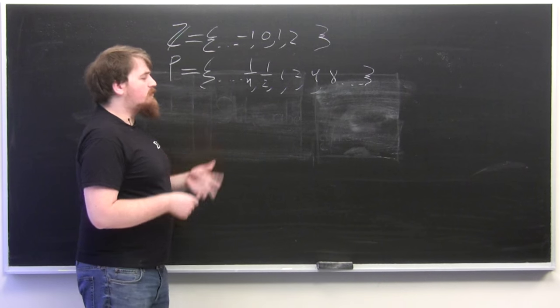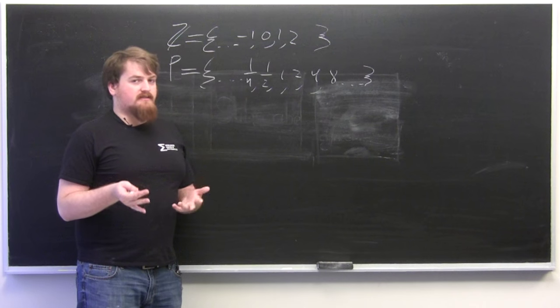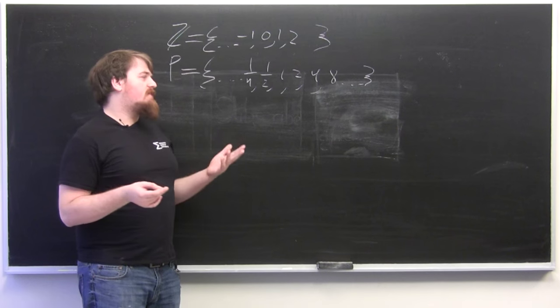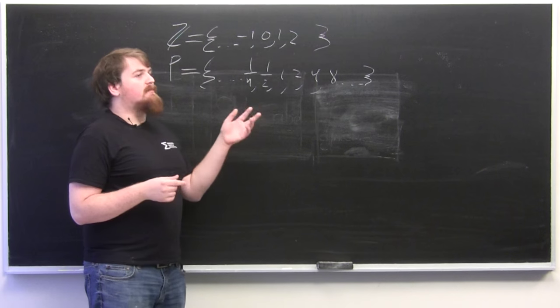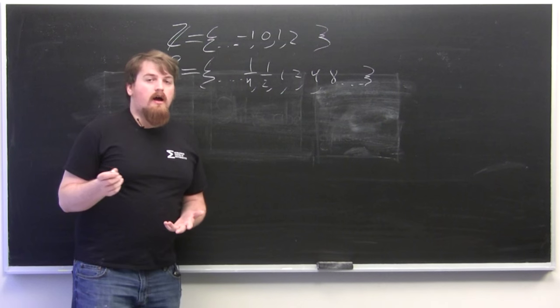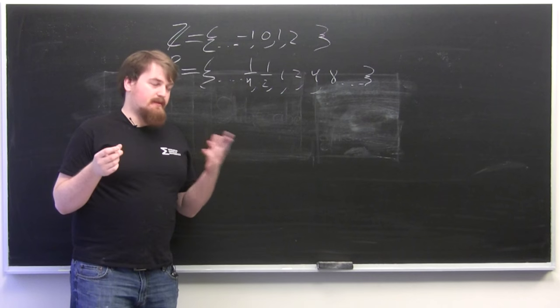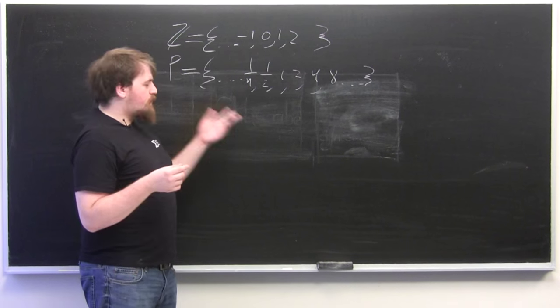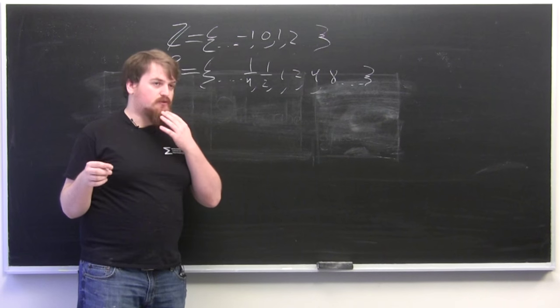In P, whose operation, as we talked about last time, is multiplication, you would say that 4 times 8 is 32. Or if you wanted to use exponential forms, 2 to the 2 times 2 to the 3 equals 2 to the 5.